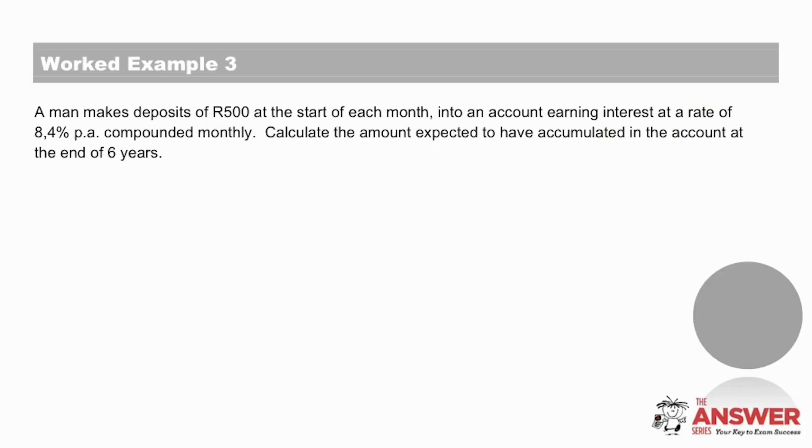Let's have a look now at worked example 3. A man makes deposits of R500 at the start of each month into an account earning interest at a rate of 8.4% per annum compounded monthly. Calculate the amount expected to have accumulated in the account at the end of 6 years. Give this example a try first before we move on to work through the solution.